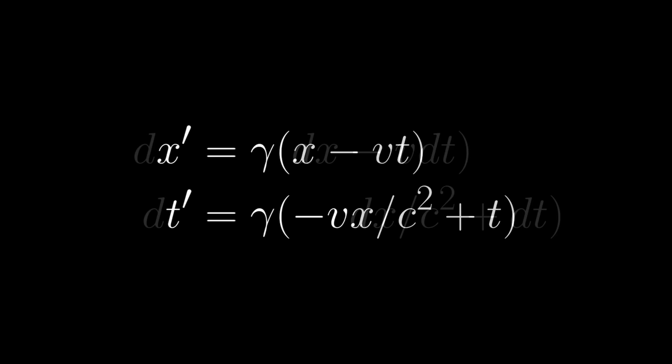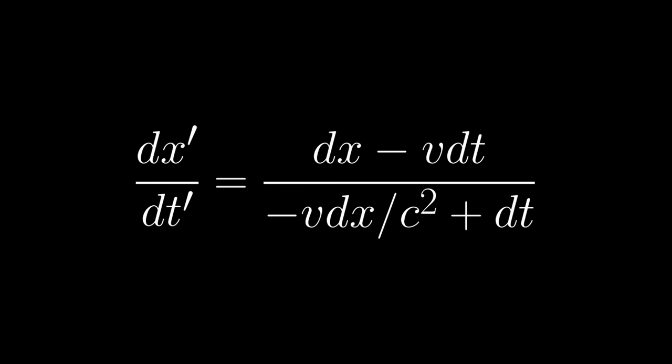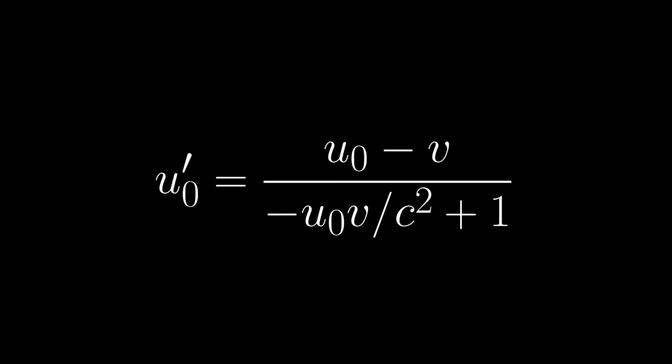Remember that by definition, this quantity has to represent the transformed velocity, u sub zero prime, from Jim's perspective. Likewise, the quantity dx dt represents the relative velocity, u sub zero, between Annie and the rock, which means we finally arrive at this expression here.